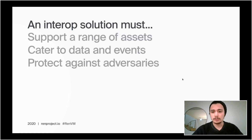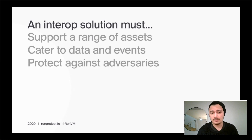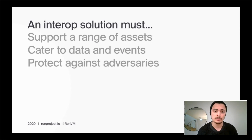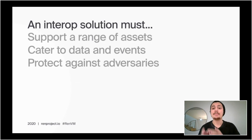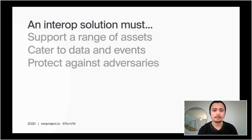So the interoperability solution we're looking for needs to be able to support a wide range of assets, support data and events, and protect itself against adversaries. Supporting a wide range of assets is a pretty obvious need. The ability to cater to data and events allows us to directly call smart contracts. And obviously every decentralized system needs to know how it's going to protect itself from adversaries, both rational and irrational.